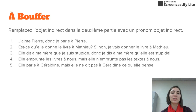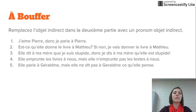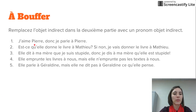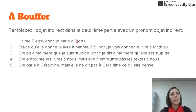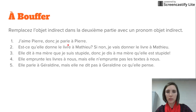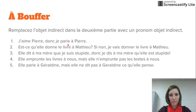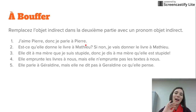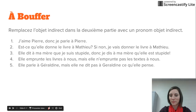Now, make sure you write down this entire sentence in your notes. You're going to replace the indirect object that is repeated from the first half of the sentence to the second half. We have: J'aime Pierre, donc je parle à Pierre. Find the indirect object and replace it with the correct indirect object pronoun, rewriting the sentence. À bientôt!